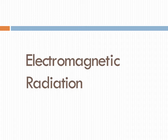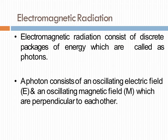Electromagnetic radiation — what is electromagnetic radiation? Electromagnetic radiations are electric and magnetic fields which are perpendicular to each other. Electric and magnetic radiation consist of an oscillating electric field E and an oscillating magnetic field M, which are perpendicular to each other.